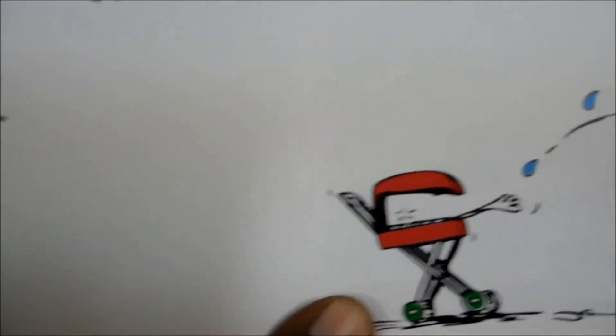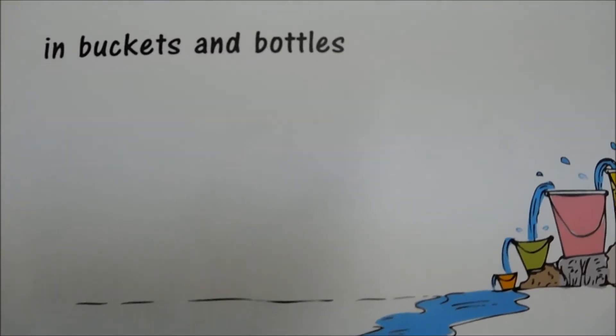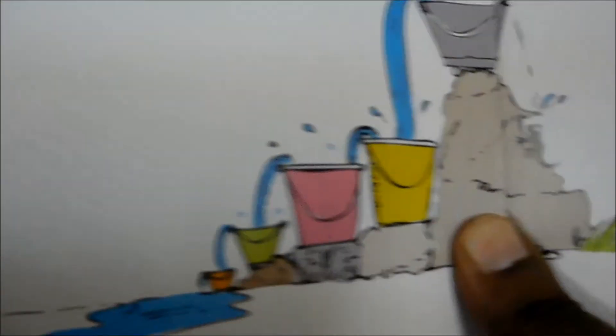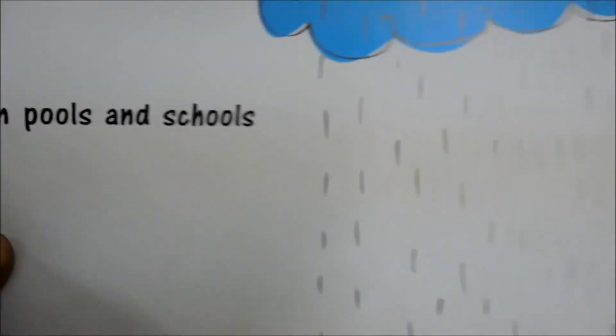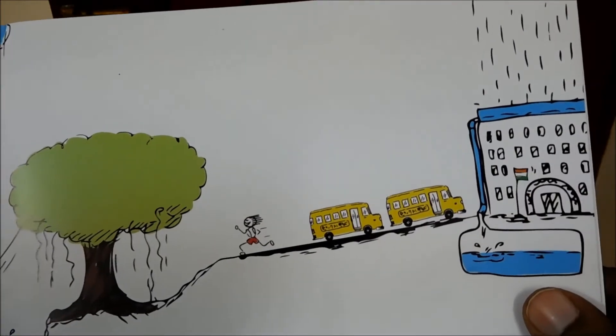The book says Let's Catch the Rain and they go on to show how we could catch the rain in buckets and bottles and in pools and schools. Look at that Indian flag there.